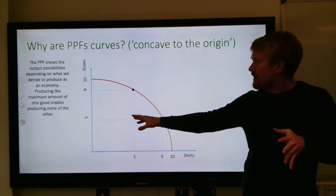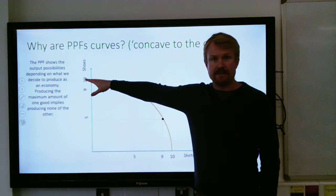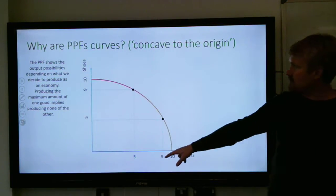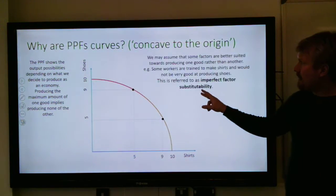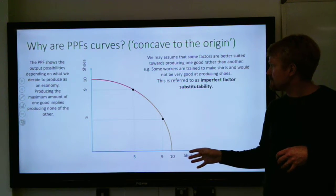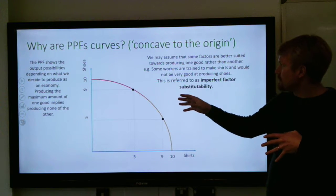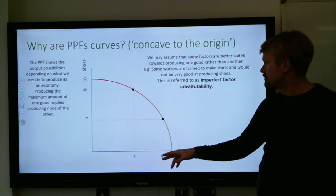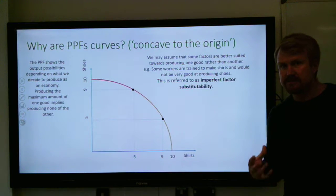it means that producing the maximum amount of one good — for example, 10 shoes — implies that you're making none of the other. So to make 10 shoes, we're making no shirts. This assumes that some factors are better suited towards producing one good rather than another. For example, some workers are trained to make shirts and would not be very good at producing shoes. This is something we refer to as imperfect factor substitutability.